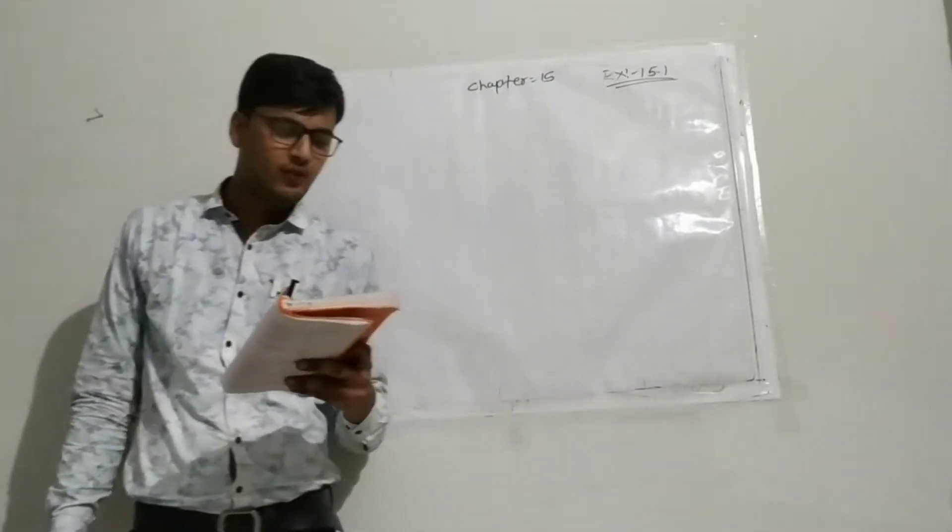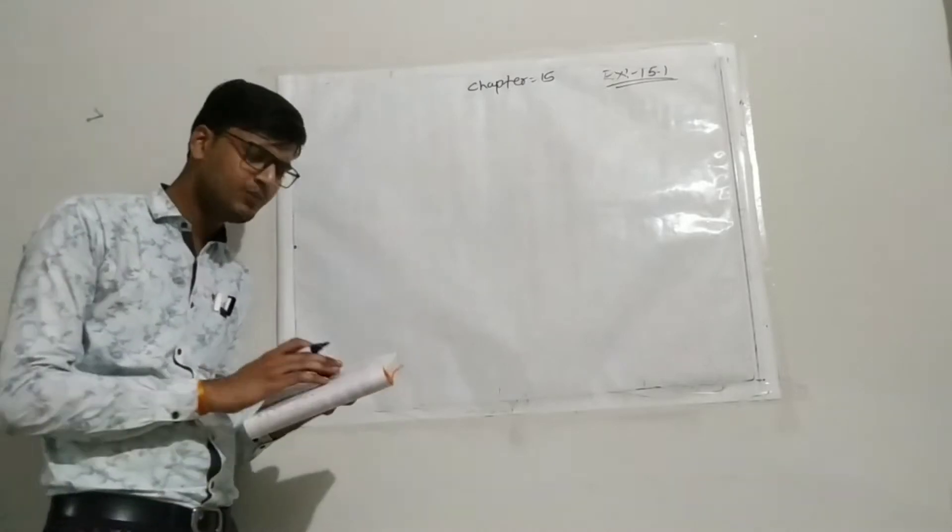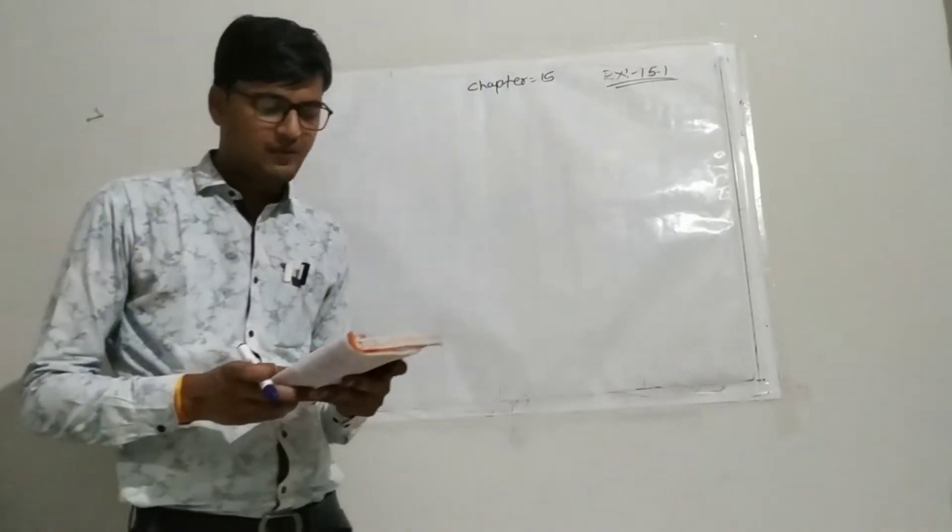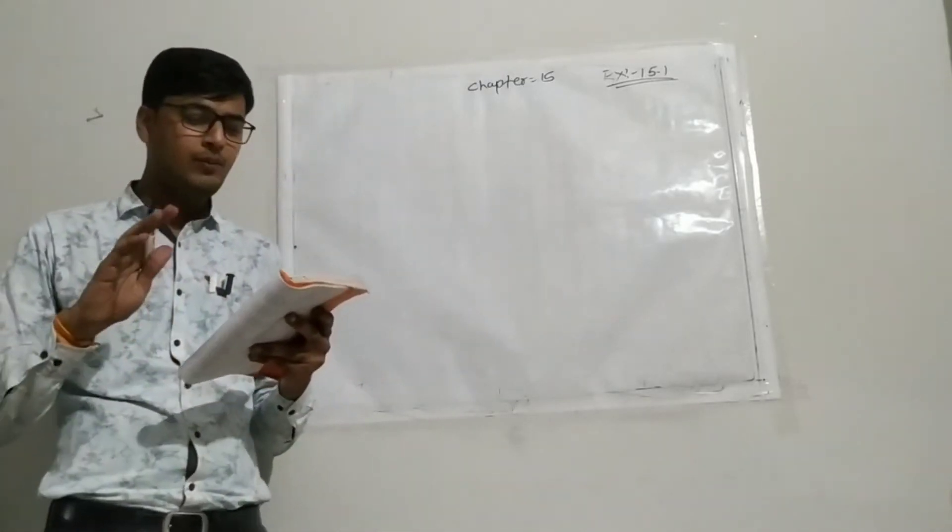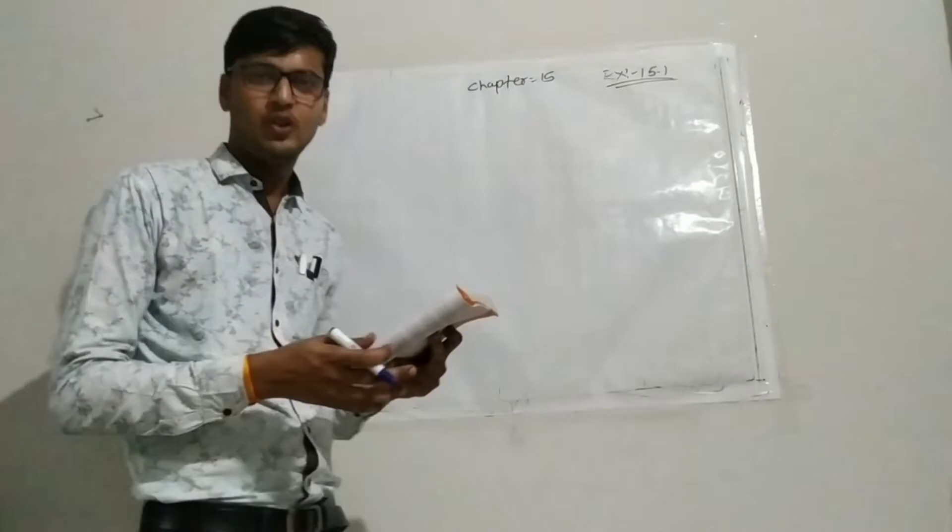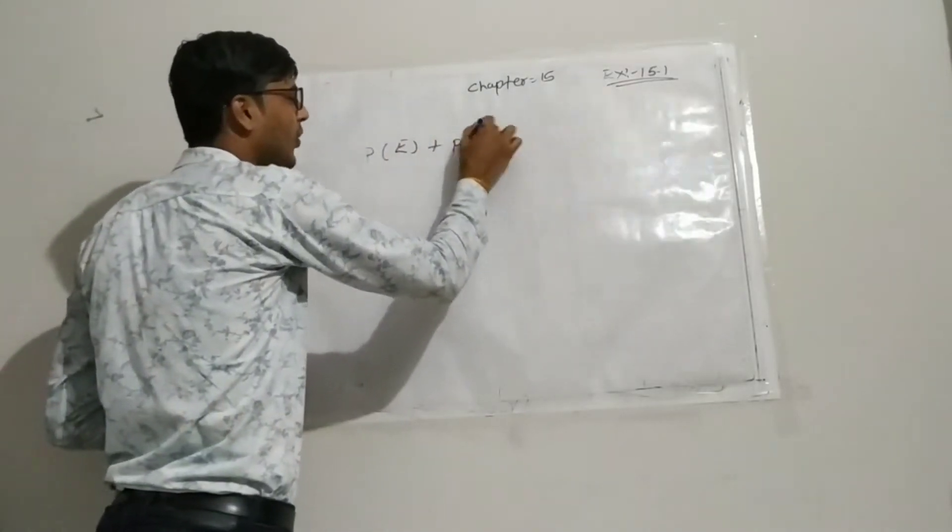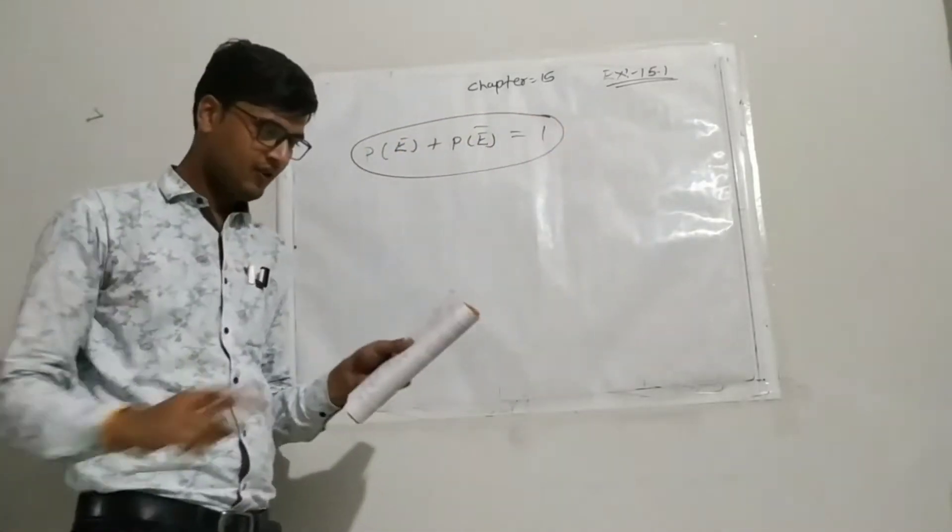So question number first is complete the following statement. It's a fill in the blank question. I read here: Complete the following statement. First is probability of event E plus probability of event not E. I have told you that P(E) plus P(E not) is what? Sum is equals to 1. So answer is 1.